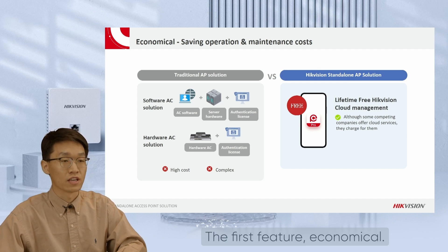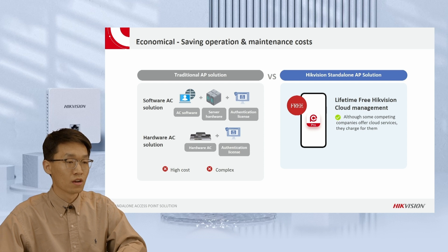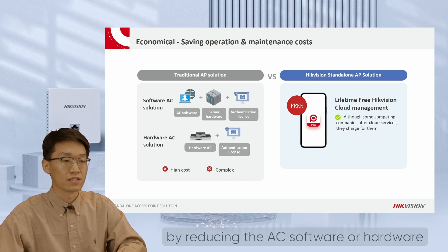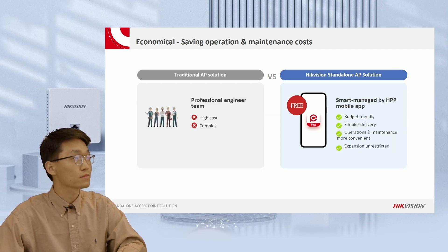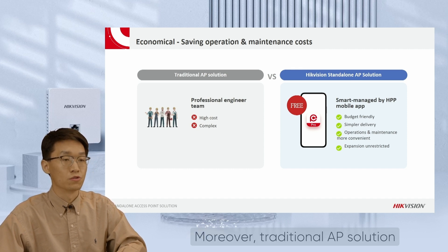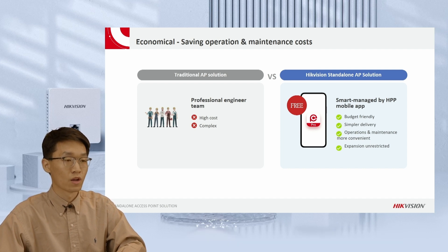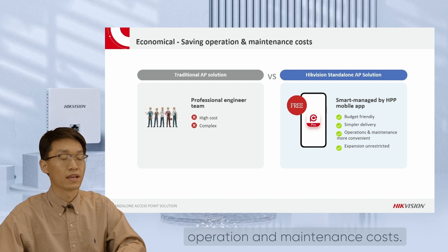The first feature: Economical. Traditional AP solution requires software or hardware with authentication license, which is costly and complex. HackerVision's standalone AP solution provides customers with lifetime-free HPP cloud management, which saves costs by reducing the AC software or hardware and charges for authentication license. Moreover, traditional AP solution requires a professional engineer team, which is also costly and complex. HackerVision's standalone AP solution enables customers to manage APs directly from the HPP mobile app, saving operation and maintenance costs.